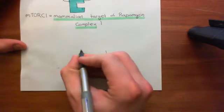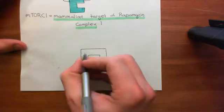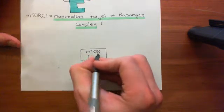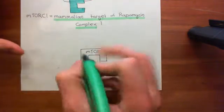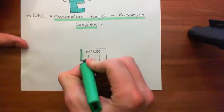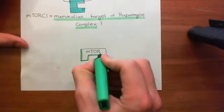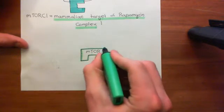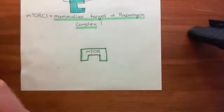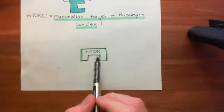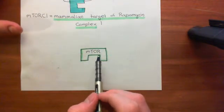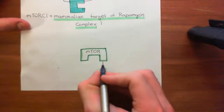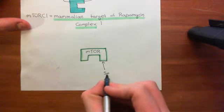So we'll start off by drawing this enzyme. Here we have the mammalian target of rapamycin, or mTOR. This is the protein within mTORC1 that is actually the serine-threonine kinase. Everything else that we're going to add on to mTOR is just regulating this one central subunit. This is a serine-threonine kinase, capable of adding phosphate groups onto serine and threonine residues within proteins.